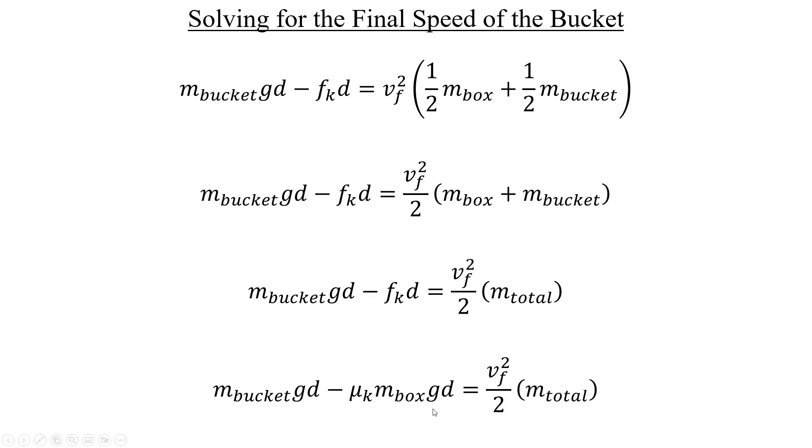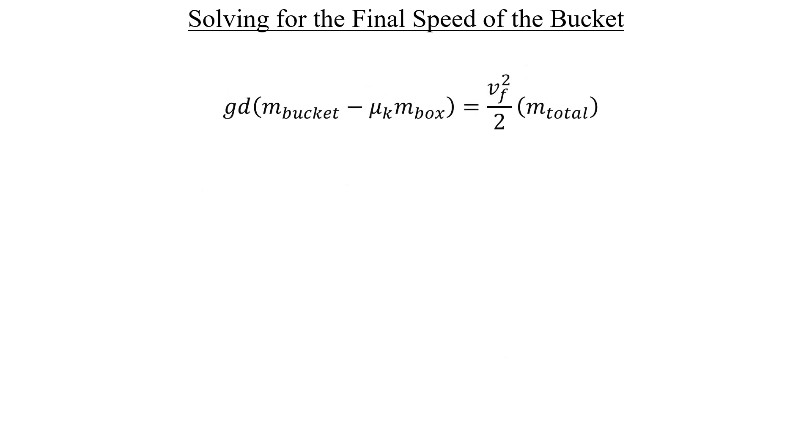The acceleration due to gravity, g, and the 2-meter displacement of both objects, d, appear in both terms on the left-hand side. Let's get those factored out. We can now multiply both sides by 2 and divide both sides by the total mass to get the square of the final velocity isolated on the right. Now, if we take the square root of both sides, we're free to plug in the numbers.